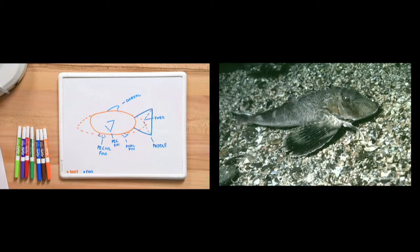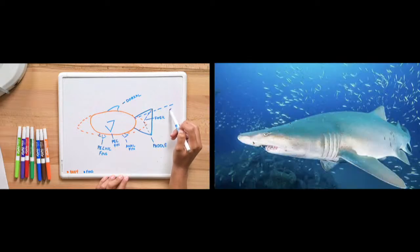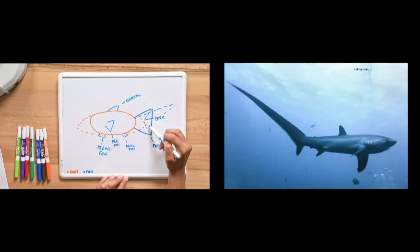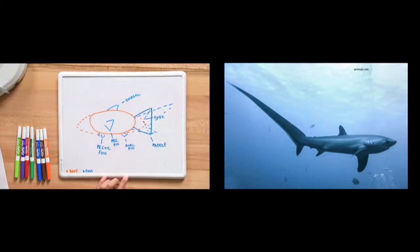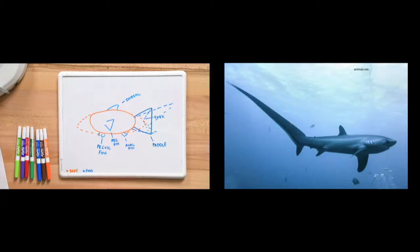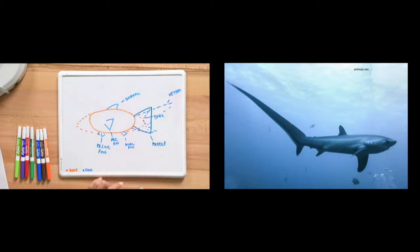There's one more specialized caudal fin worth noting: the thresher shark. That thresher shark has such a large top lobe of its caudal fin and a very small bottom lobe. The top lobe can actually be used to whip around and knock fish unconscious so they can be eaten more easily. We call that heterogeneous — the top is different than the bottom. Homogeneous would be the same top and bottom; heterogeneous means the top is different, and that's what we see with the thresher shark.